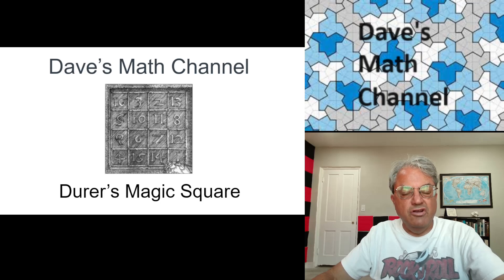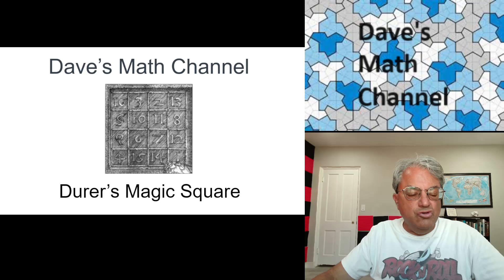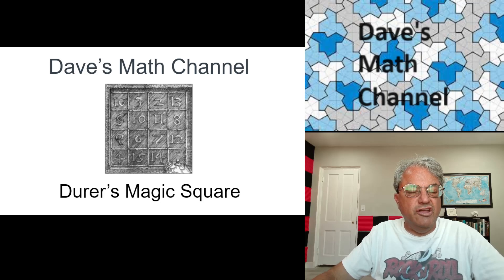Yesterday I talked about the Loshu Square which was the Order 3, the Unique Order 3 Normal Magic Square. Well it turns out even though there's only one Normal Order 3 Magic Square, there's a total of 880 possible Order 4 Magic Squares. The number grows very very fast. I think the number is known for Order 5 as well. It's in the millions I believe and it's not even known for anything bigger than that.